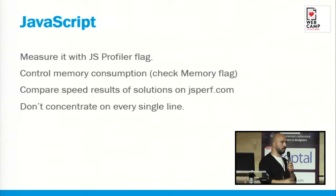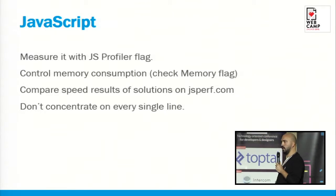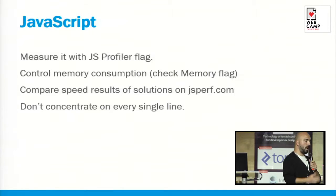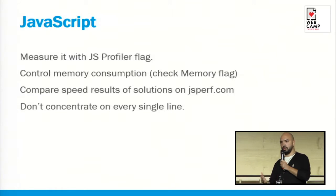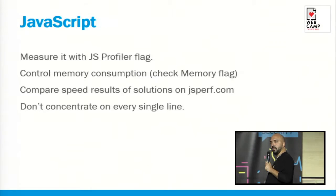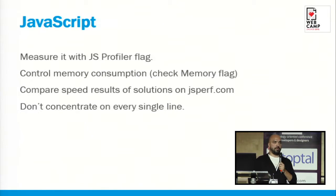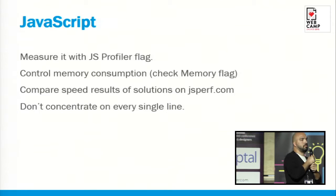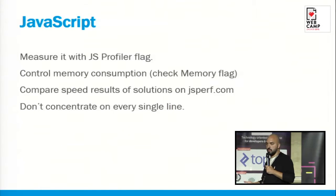If we want to see memory consumption — which is obviously important to have a silky smooth app — we have to check the memory flag. Also, when you find some of your functions too slow and you find a new solution you think might be faster, you can compare those solutions on JS Perf. Don't concentrate on every single line, because sometimes each line can make a small difference that isn't important unless you're making a game in the browser.